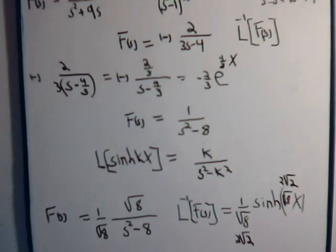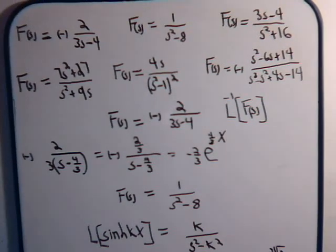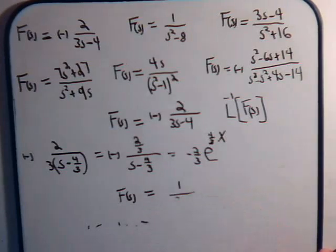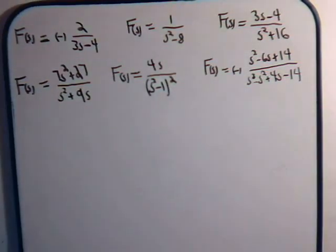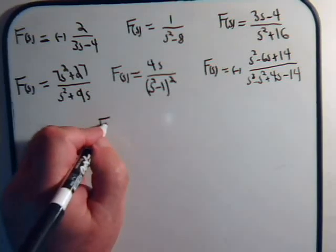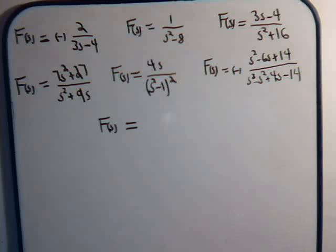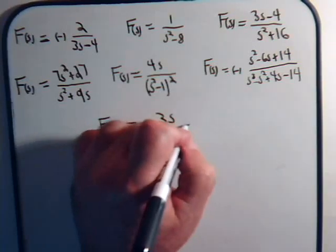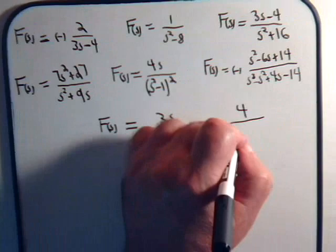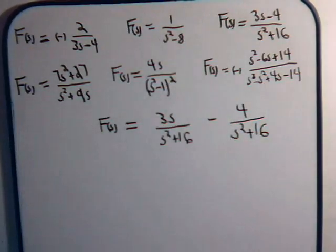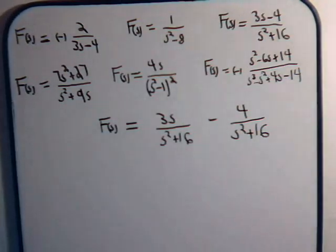And here we have one, the third one: 3s minus 4 divided by s squared plus 16. Okay, so f of s. And probably, if you're thinking right off the bat, let's focus on the two parts that would definitely be the way to go. So we write it like that, and now we should be all set.